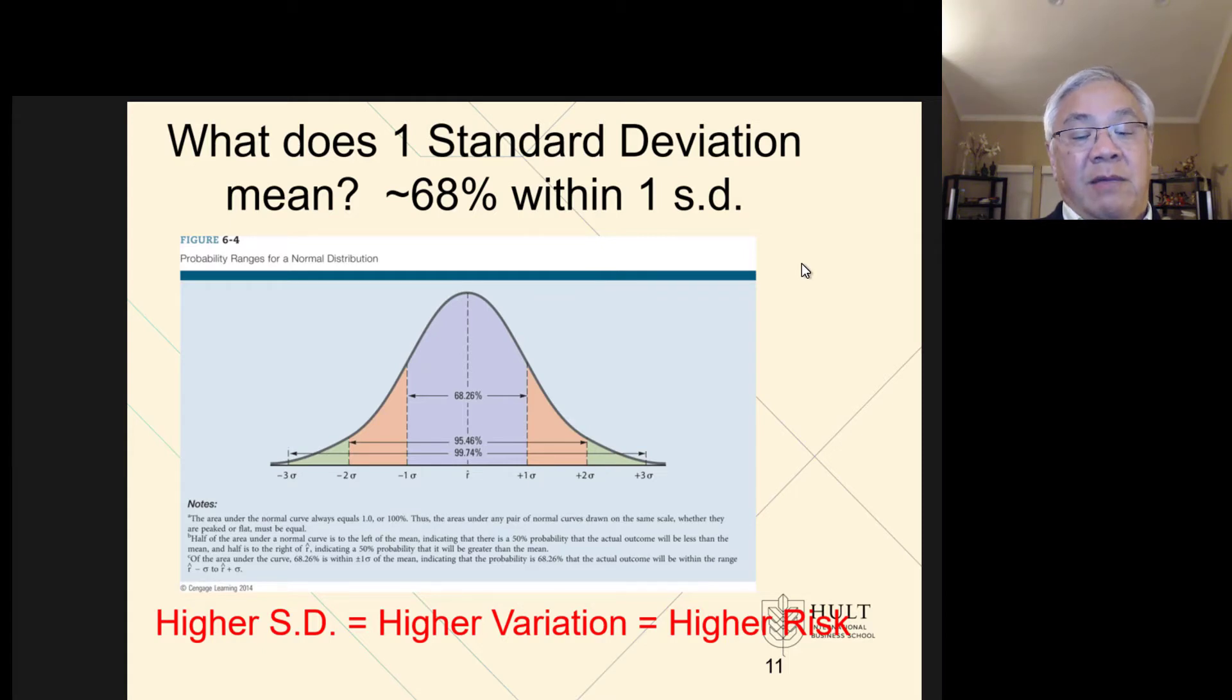So that's why we normally look at standard deviations as one standard deviation away, because within that range of high to low, we would capture 68% of all expected outcomes.